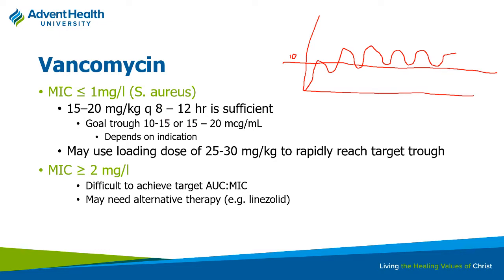Different trough level targets exist because of infection severity or difficult tissue penetration. When we measure a blood level, that doesn't tell us the tissue level. For infections in difficult-to-penetrate areas like the CNS — meningitis — or the lungs — pneumonia — we shoot for higher blood levels as a surrogate, reasoning that higher blood levels should yield higher tissue concentrations. That's why meningitis, severe sepsis, and pneumonias warrant those higher trough targets.